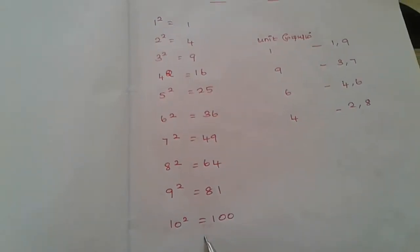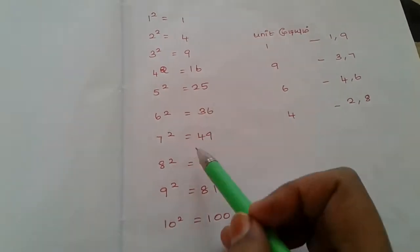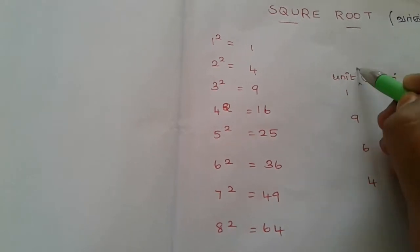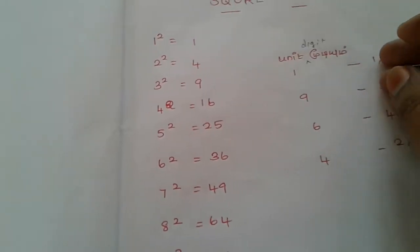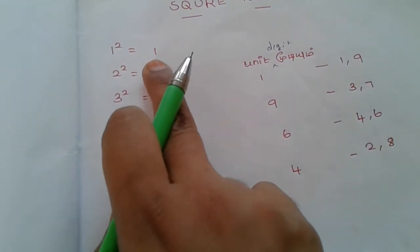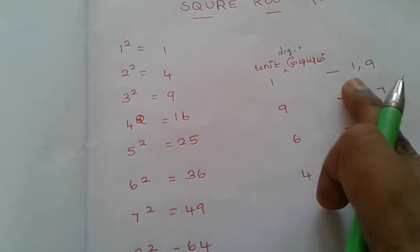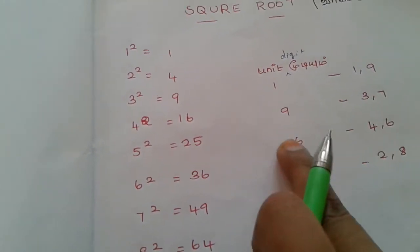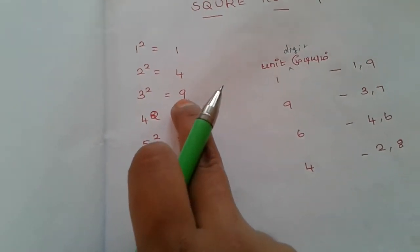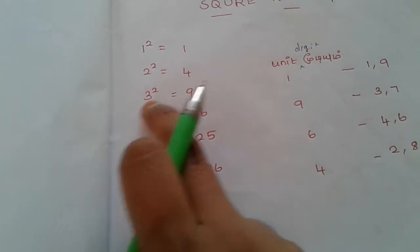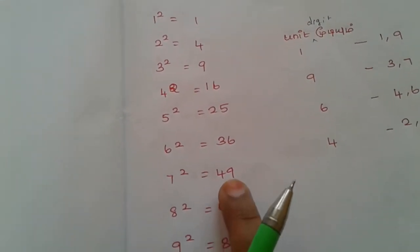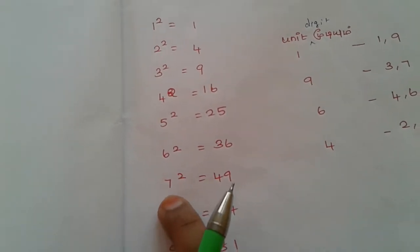Now we will study the square root method. What we need to do is look at the unit digit. The unit digit is 1. You can say 1. In this square root, 1 is 1. What is the second number? 1 is 2. 3 is 7. The unit digit is 2. 3 is 3. 3 is 4. We need to identify the unit digit. 1 is 7. That is 7.